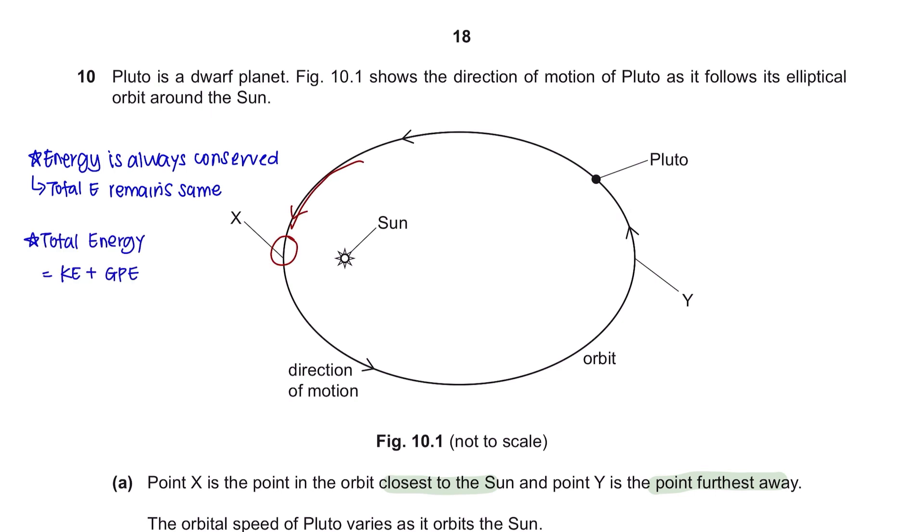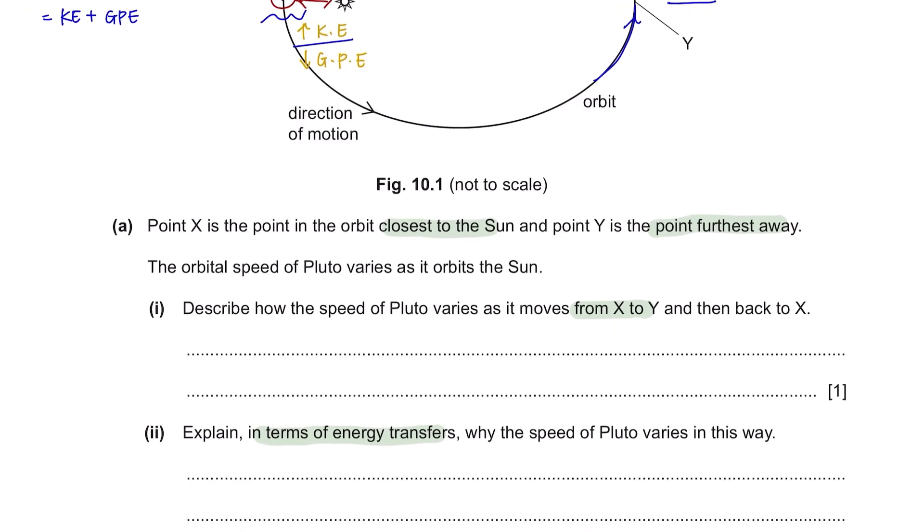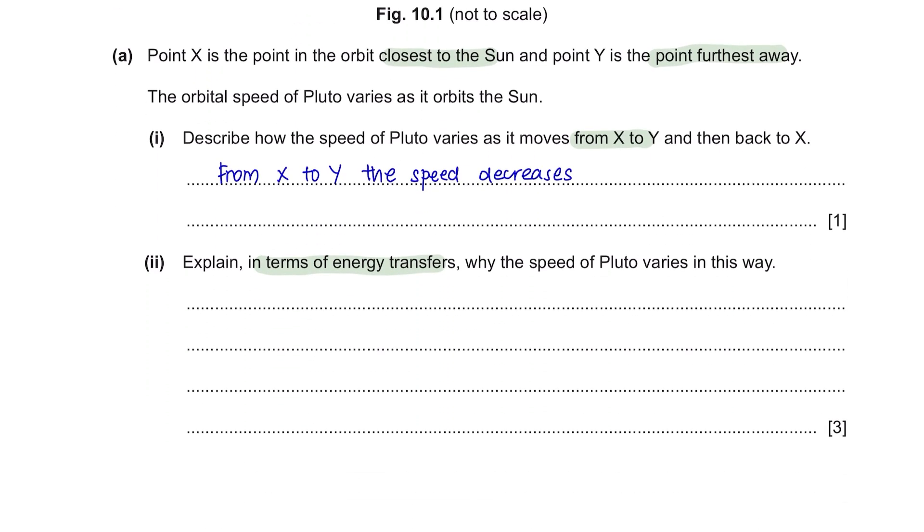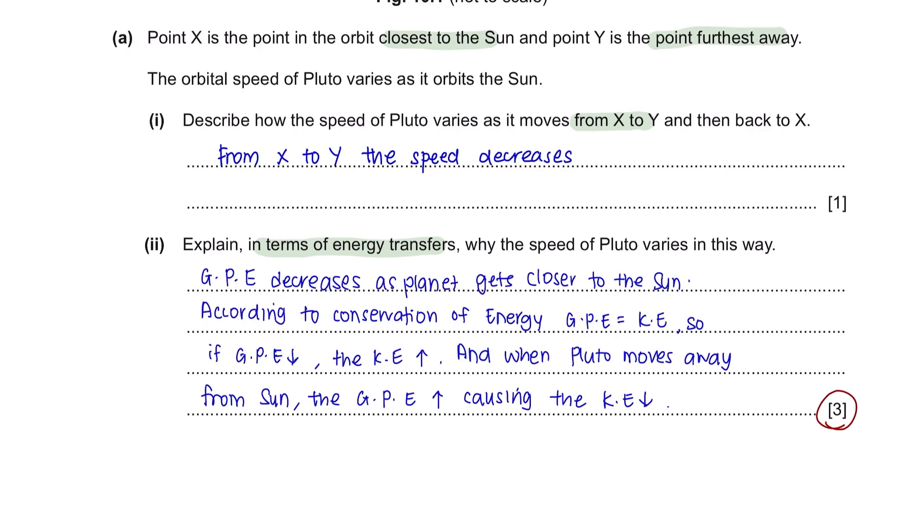As Pluto approaches the sun which is the closest distance to the sun, it gains kinetic energy and loses its gravitational potential energy. And as Pluto travels away from the sun, which is the furthest from the sun, it will gain the highest gravitational potential energy and loses its kinetic energy. So the speed varies in a way that when it is closest to the sun, it has a higher speed and as it moves away from the sun, it has a lower speed. So for part 1 to describe how the speed of Pluto varies, you can say that from x to y, the speed decreases. And in terms of energy transfers, for 3 marks, you can explain using the principle of conservation of energy. The arrow that point down stands for decreases and the arrow that point up stands for increases. Please do not write the way that I have written this but instead use words to describe your answer.